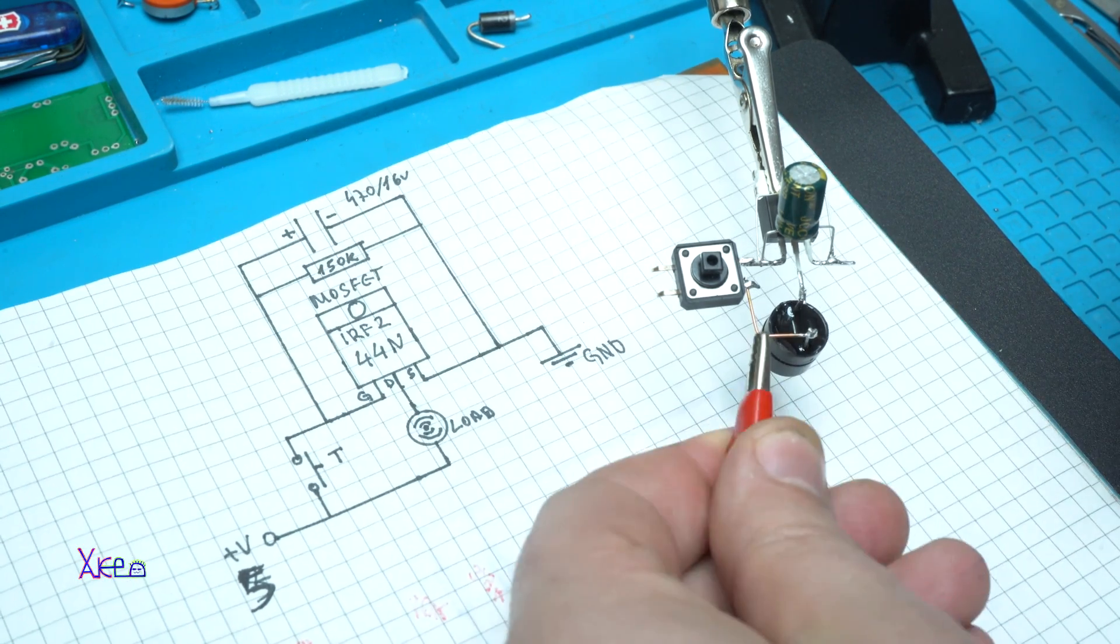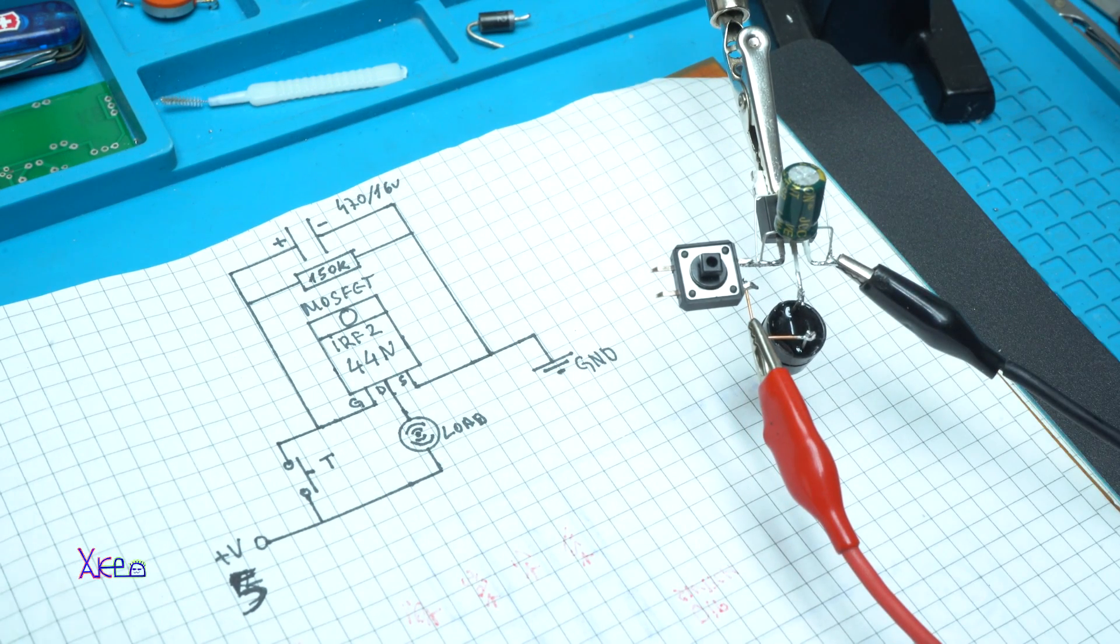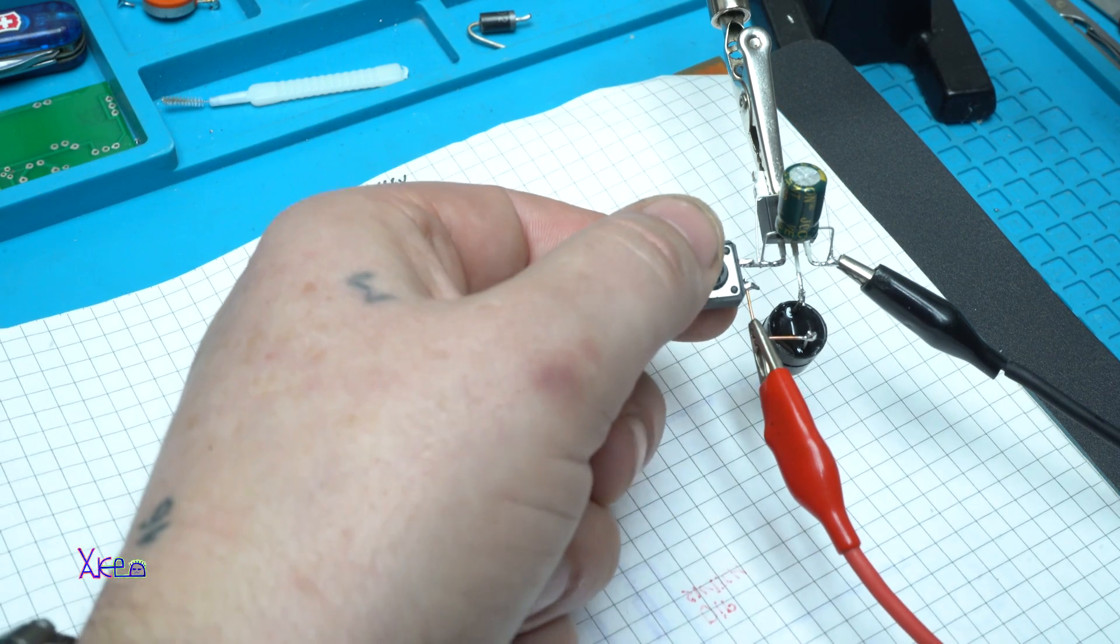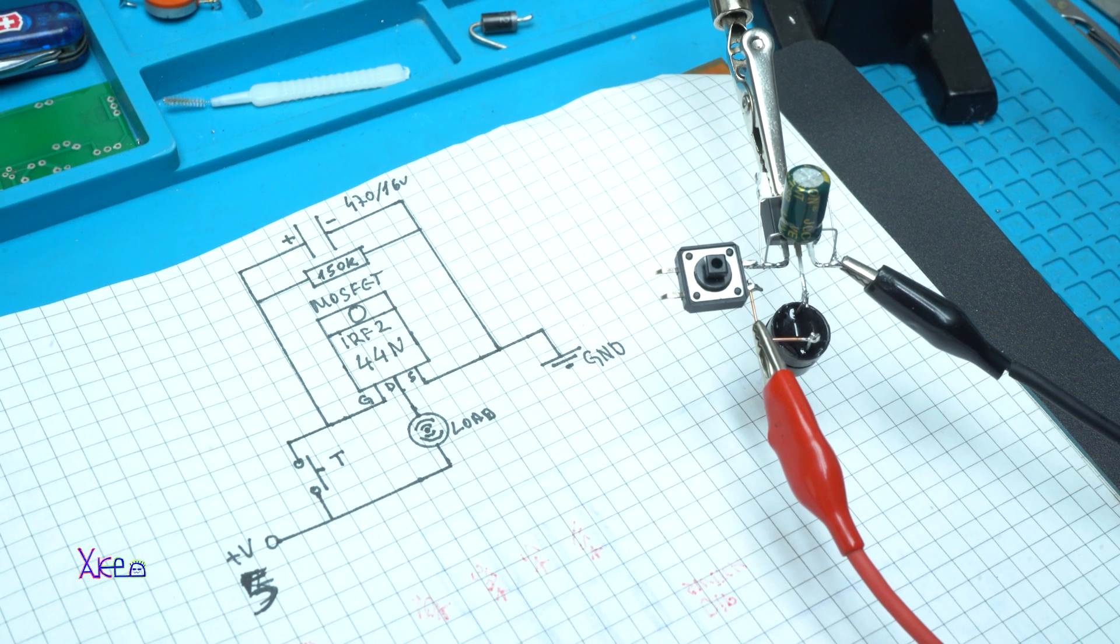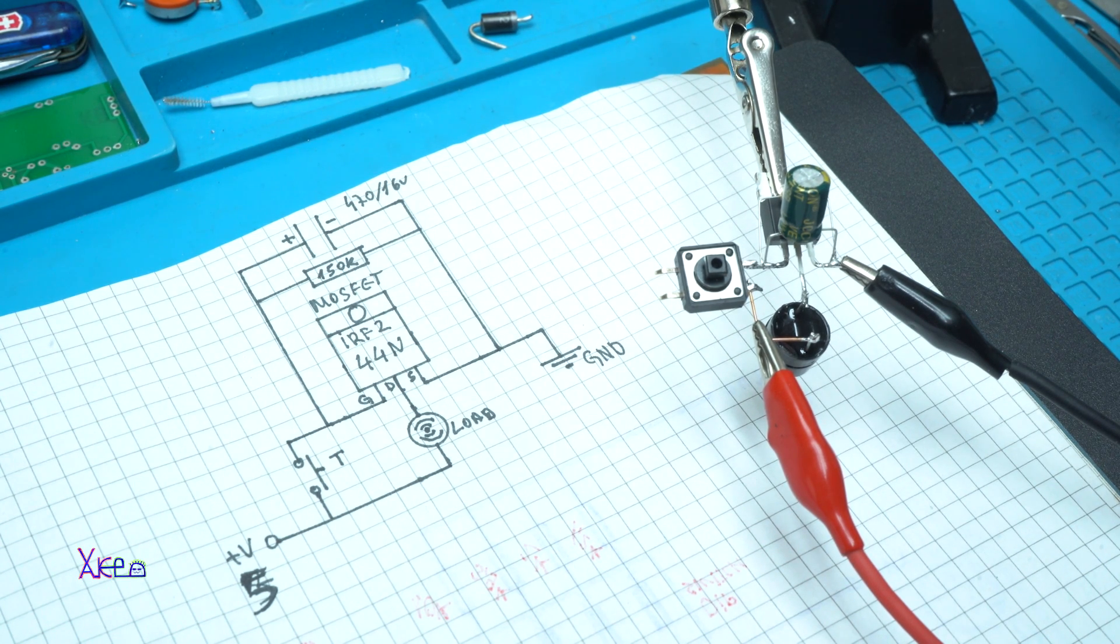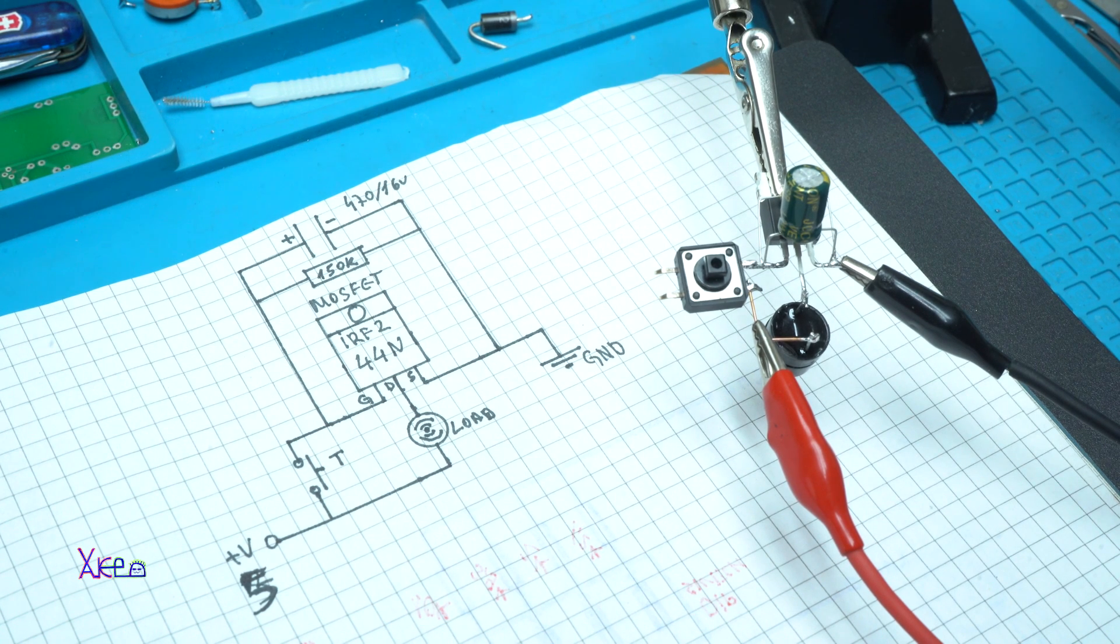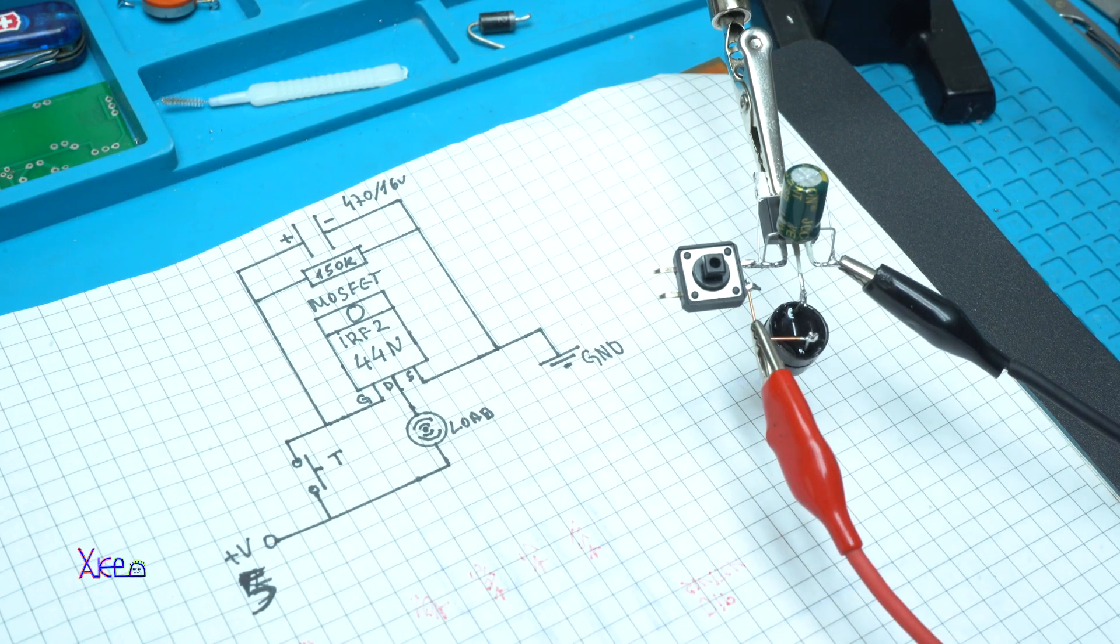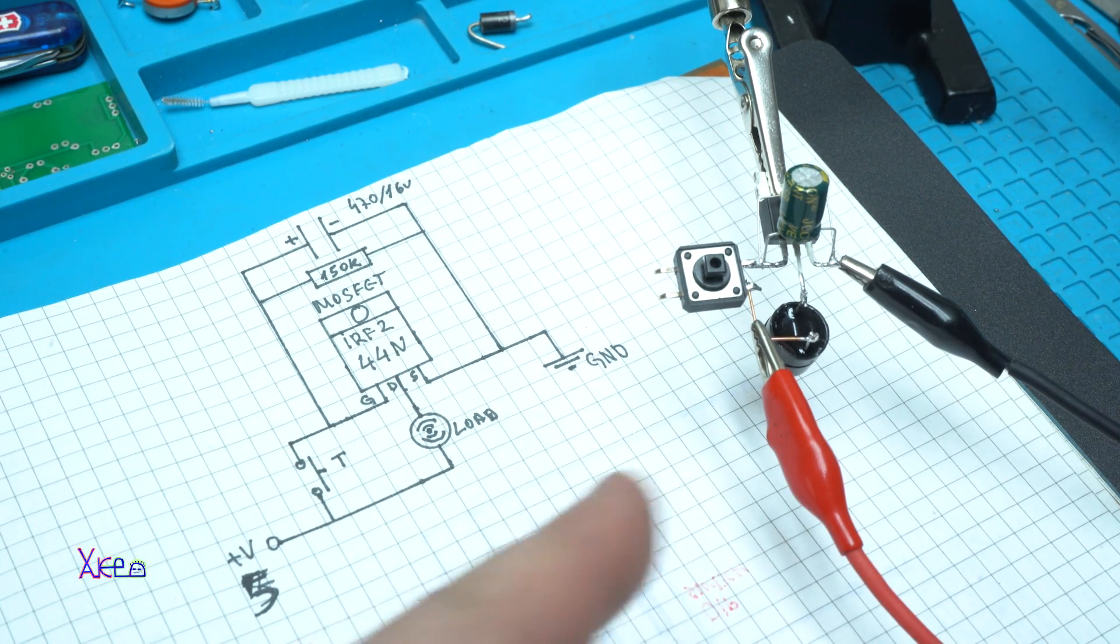Positive goes here and negative here, and 5 volts. And when you press the tact switch, it should stay on for around 15 seconds, 15 seconds to discharge the capacitor. I'm going to measure with my stopwatch.